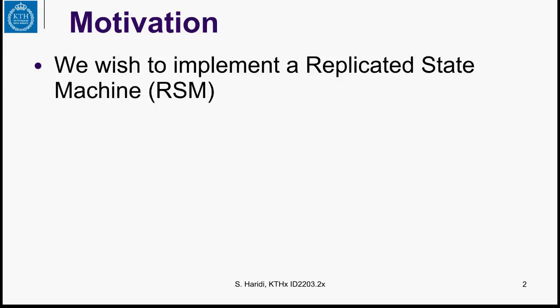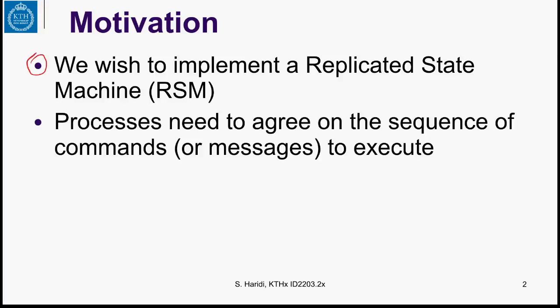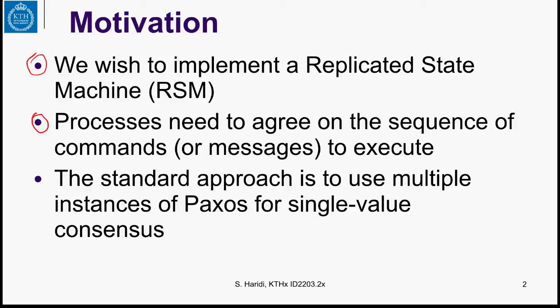So here is a motivation. We wish to implement a replicated state machine, and processes need to agree on a sequence of commands or a sequence of messages to execute. The standard approach is to use multiple instances of Paxos for single value consensus. As background, a replicated state machine is used to provide fault-tolerant services, and it is essential in many systems — for example, ZooKeeper, which is an open source service, or Chubby, which is a service at Google.